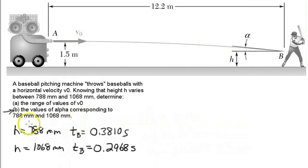Once again, we've got the baseball pitching machine. It launches the ball with an initial horizontal velocity of v0. That ball comes in and drops some due to gravity while it's traveling. It comes in at a height between 788 and 1068 millimeters.